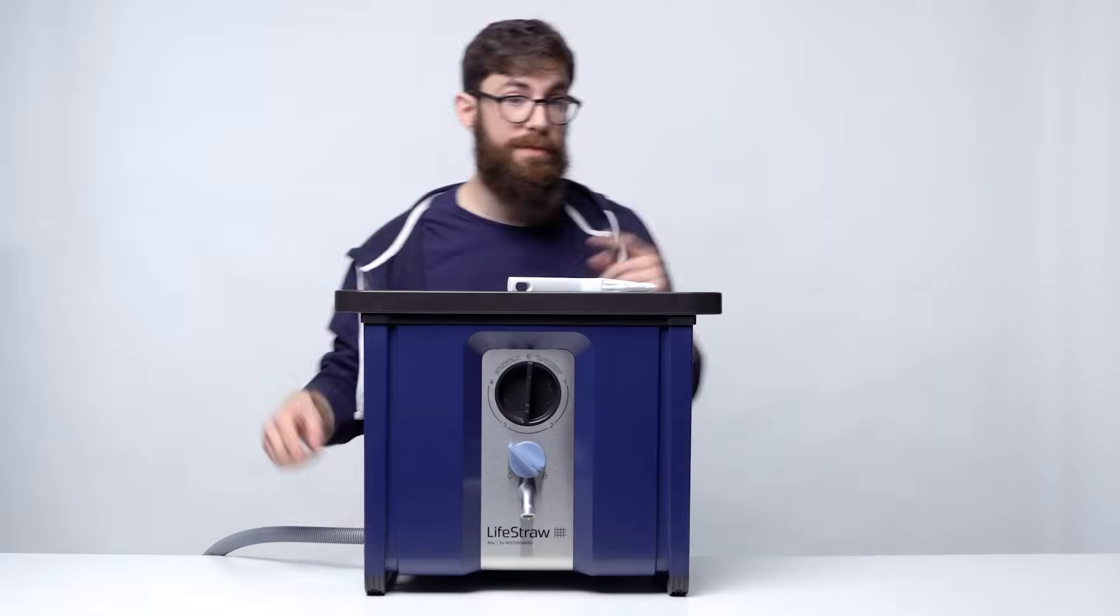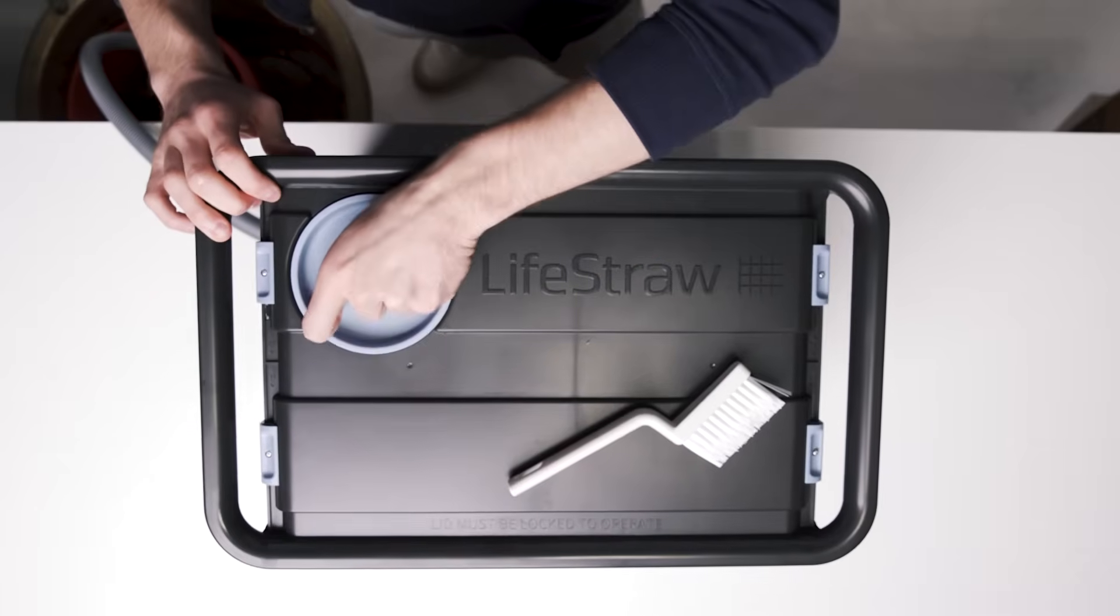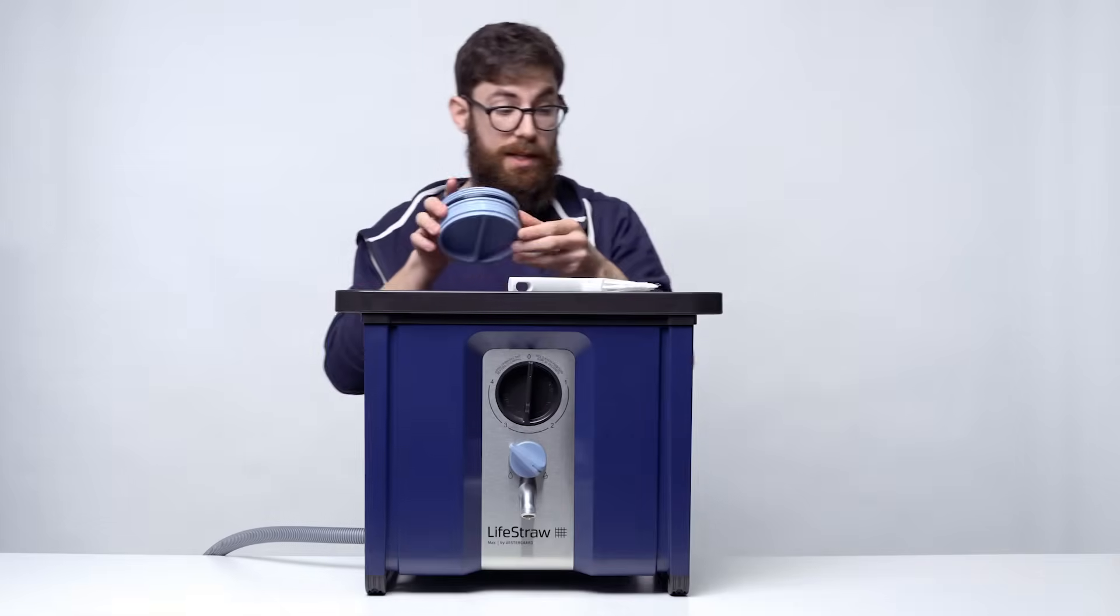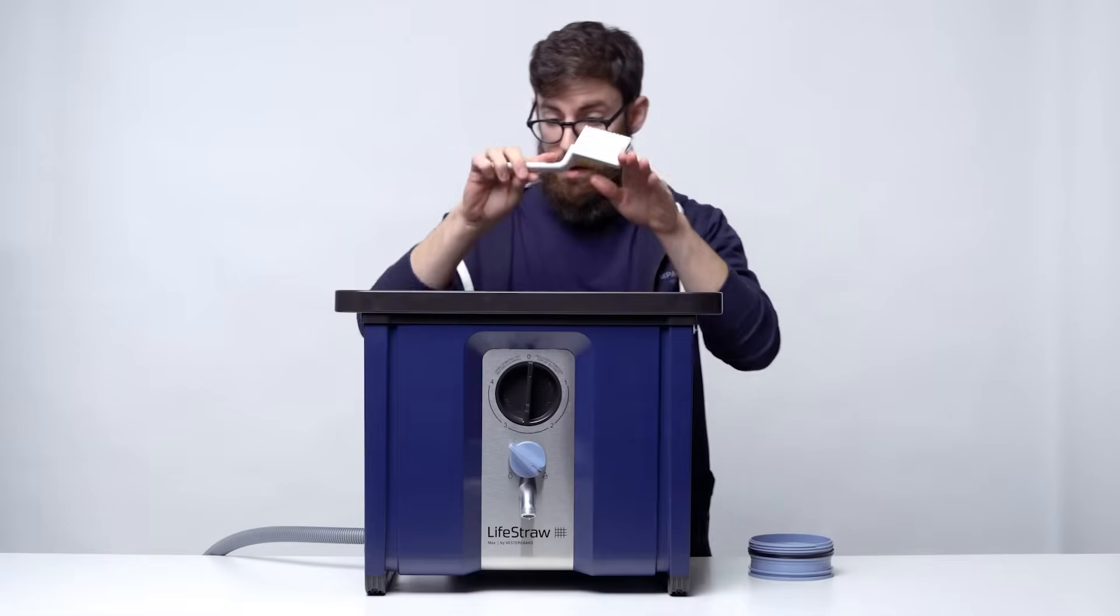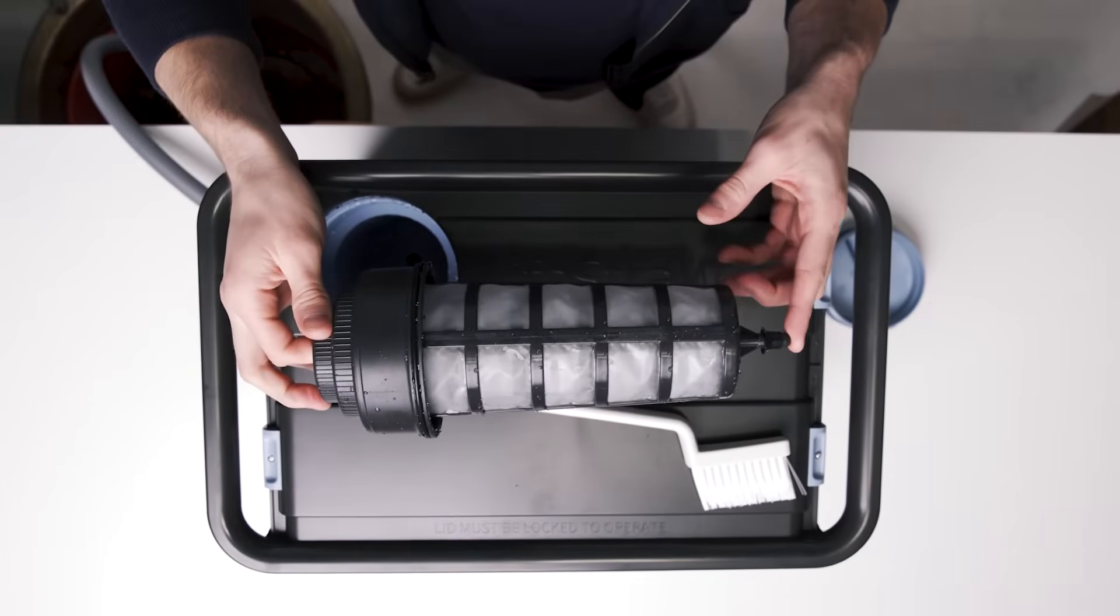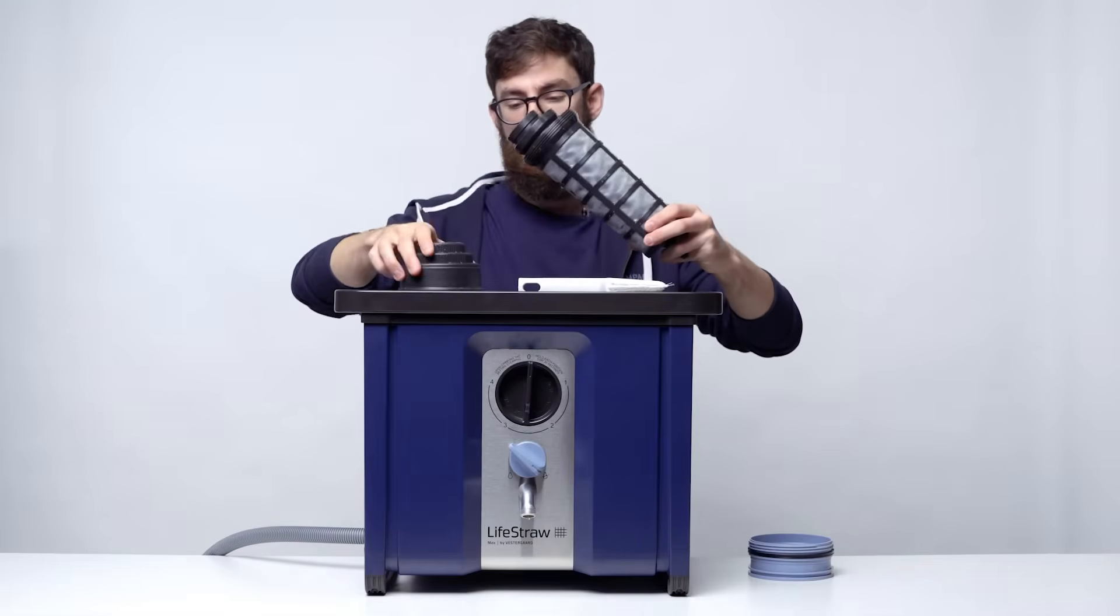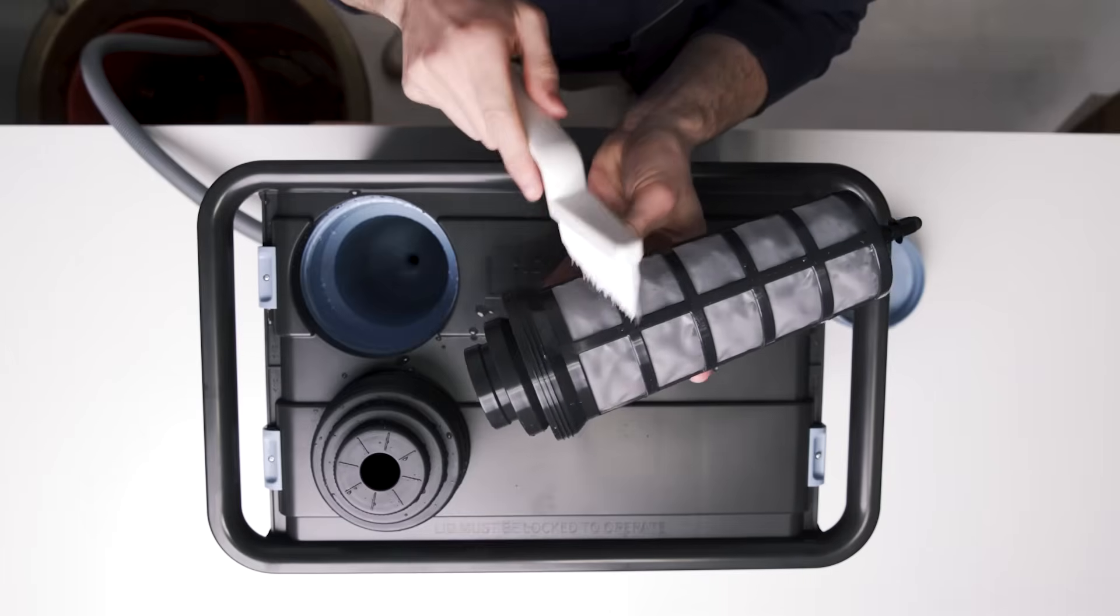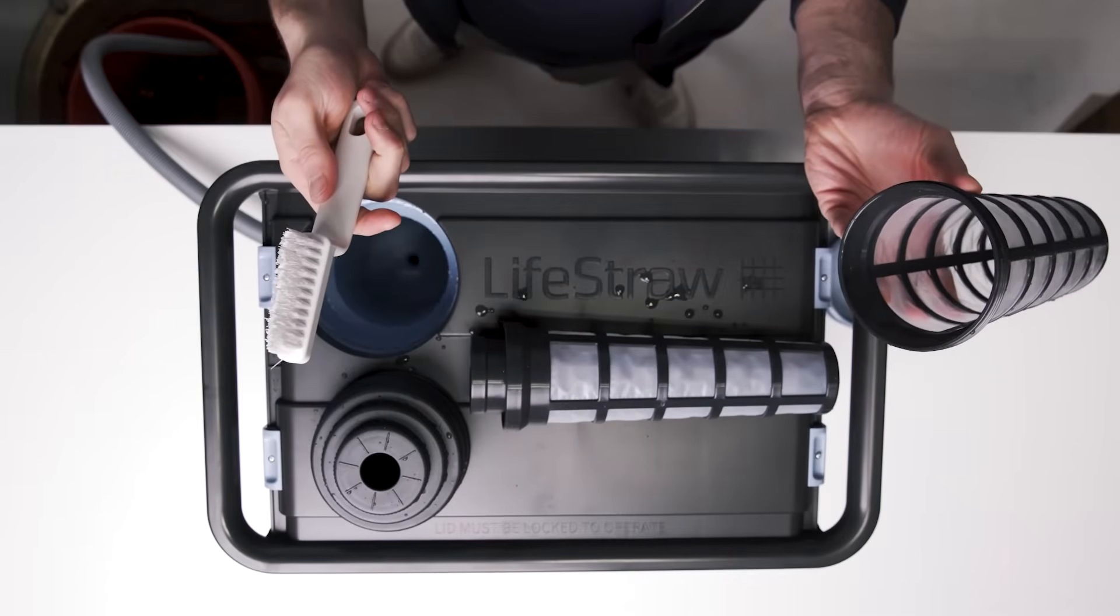Make sure your water source is turned off and your dial is turned to off as well. Carefully, slowly, remove your pre-filter cap. Set it to the side. Have a soft bristle brush ready for cleaning. Lift your pre-filter from your Max. Take off the top cap.